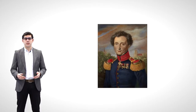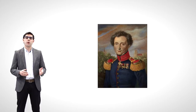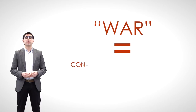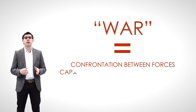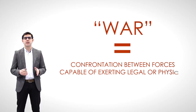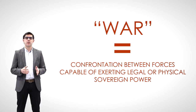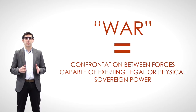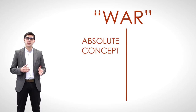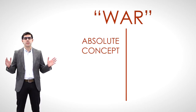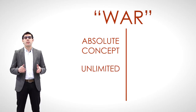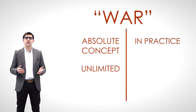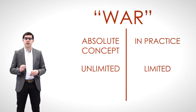Following Carl von Clausewitz, a Prussian officer who fought in the Napoleonic Wars and who wrote the book On War, war is a confrontation between forces capable of exerting legal or physical sovereign power — that is, in the territory or over the people they control, there exists in actual fact no higher power. In theory, and as an absolute concept, war tends to extremes and is unlimited. But in practice, Clausewitz says that war can indeed be limited or regulated.